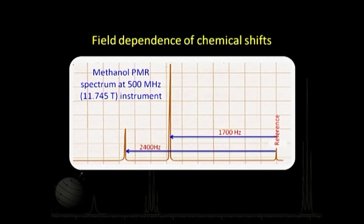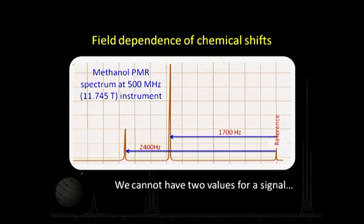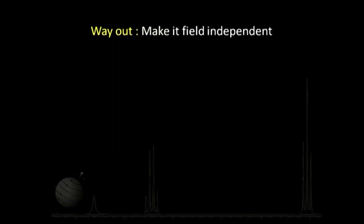When the same molecule is measured at a higher field — say a spectrometer working at 500 MHz or 11.745 tesla — the signal that was at 340 Hz now shifts to about 700 Hz, and the other is at 2400 Hz. So we get two different values for the same signal on different instruments, which we cannot afford because we need a unique identification. The solution is to use a scale that is field-independent.